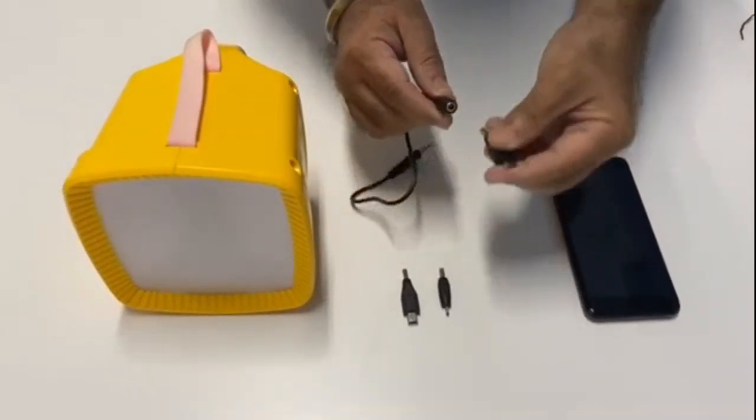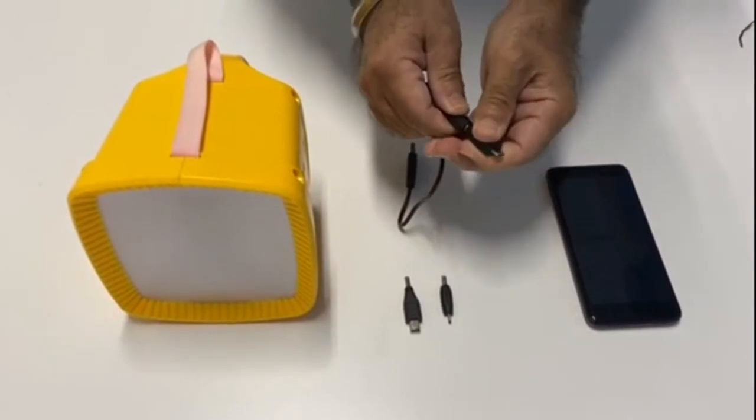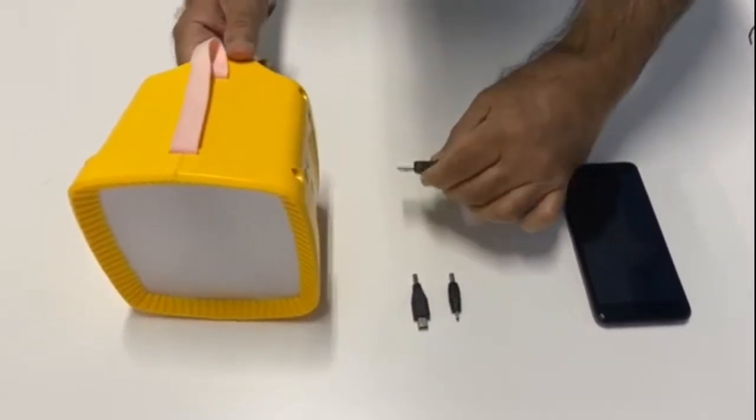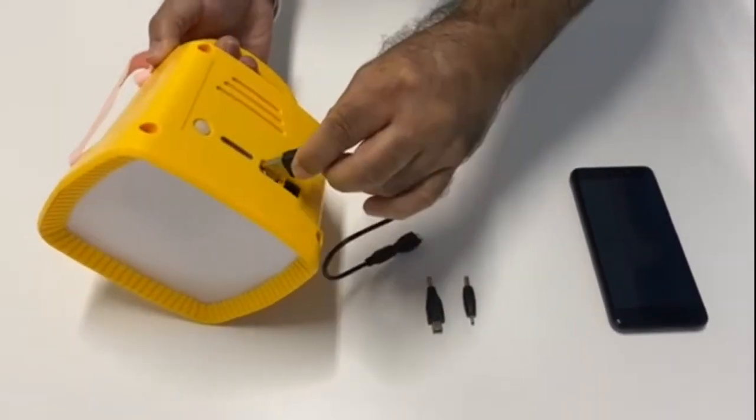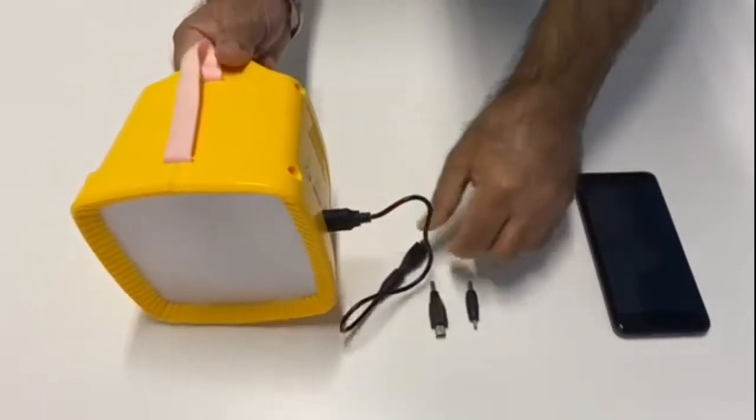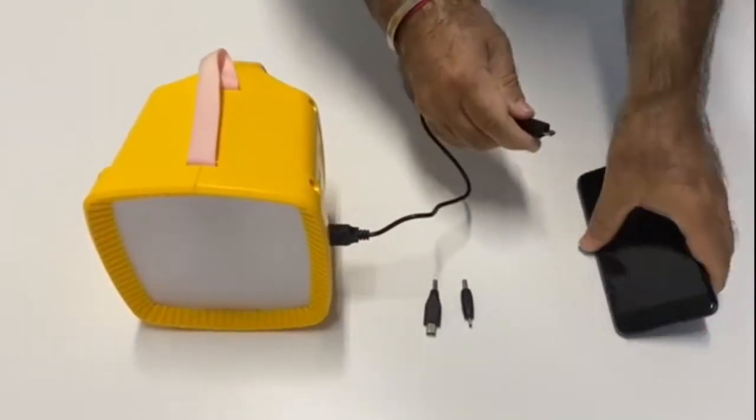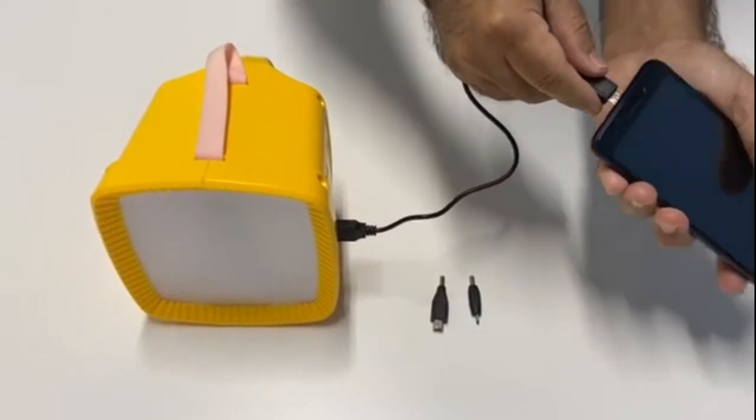The Jugnu Solar Lightbox also has a phone charging capability. You can charge a variety of phones from the USB port using the cable provided in the box. There are three adapters that are provided that can charge most phones used in rural areas.